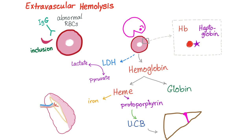In extravascular hemolysis, we're in the spleen and we have an abnormal RBC. Why is it abnormal? Many different causes. Maybe there is an antibody — IgG — coating the red blood cell. IgG makes the red blood cell delicious and tasty to the macrophage. This process is called opsonization. Opsonin comes from a Greek word literally meaning 'delicious side dish.' IgG is very good for opsonization; IgM is not good for opsonization — IgM is good for complement activation.